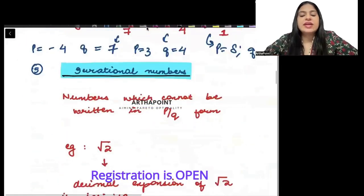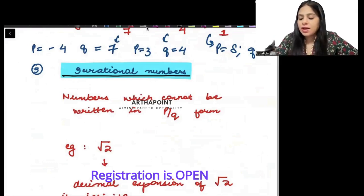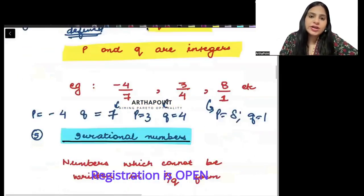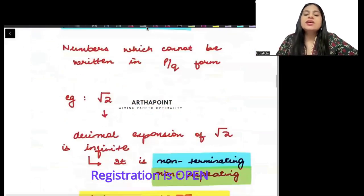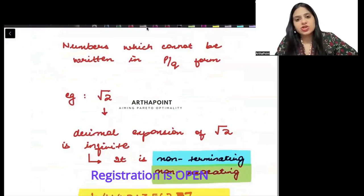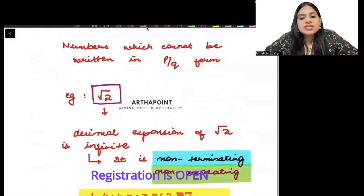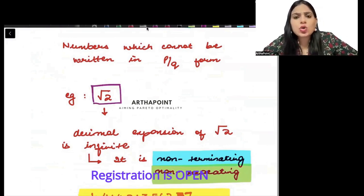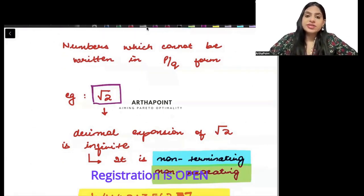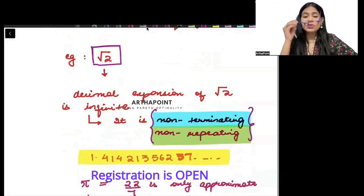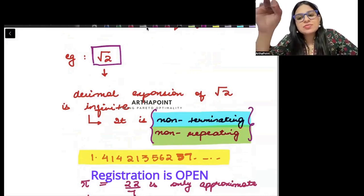Next we have irrational numbers. Irrational numbers are those numbers which cannot be written in P by Q form. What I can write in P by Q form is rational; what I cannot write in P by Q form becomes irrational. For something to be irrational, we want that number to be non-terminating and non-repeating — the decimal should not stop and should not repeat.